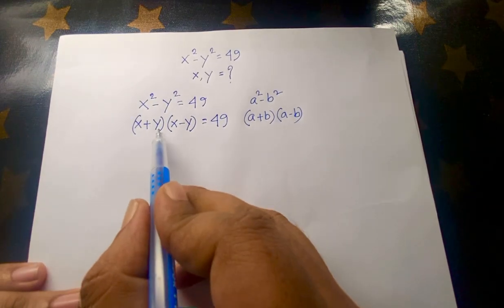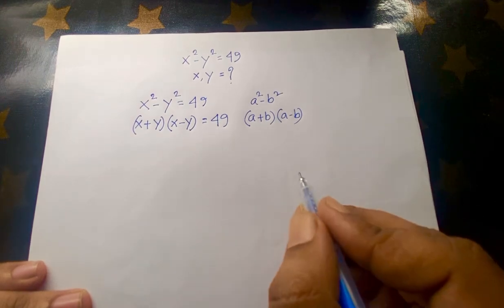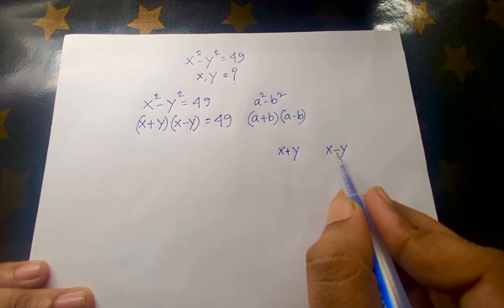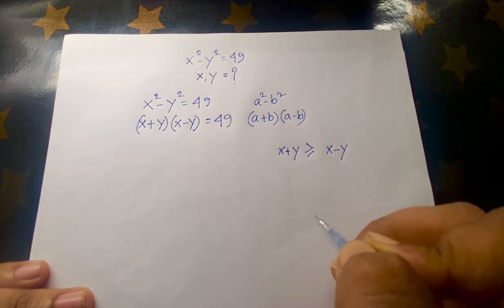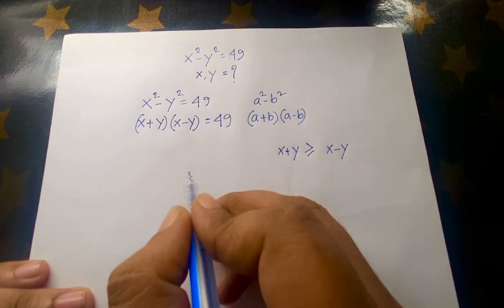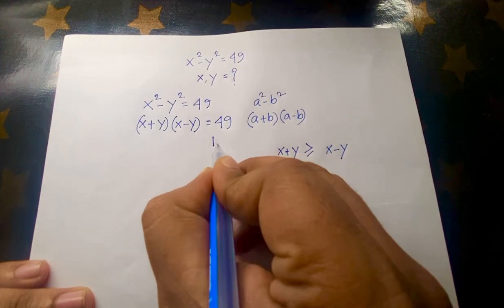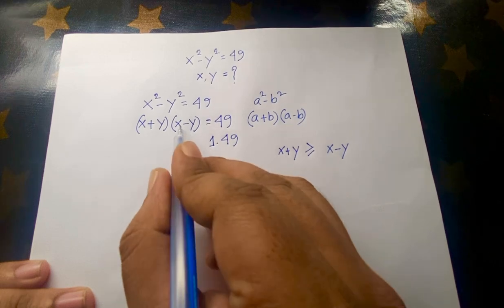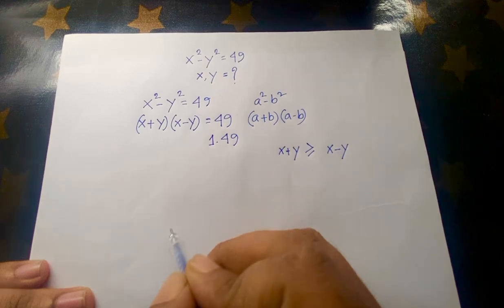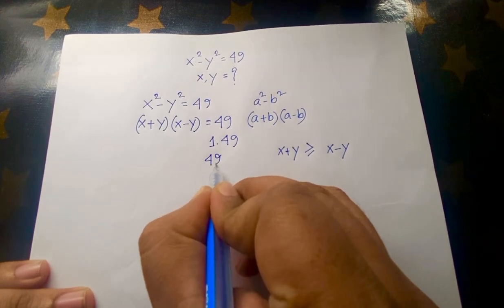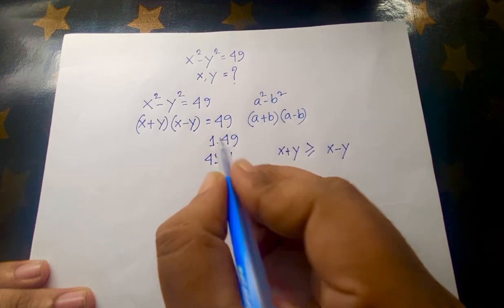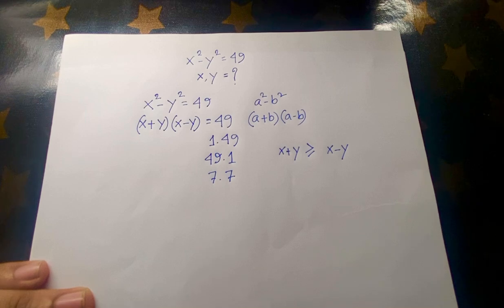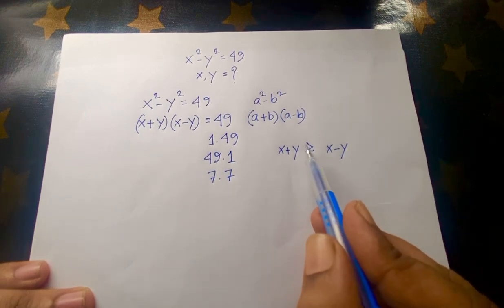Now we need to find (x + y)(x - y) = 49. Since x + y is always greater than or equal to x - y, the factor pairs of 49 to consider are: 1 × 49, 49 × 1, and 7 × 7.